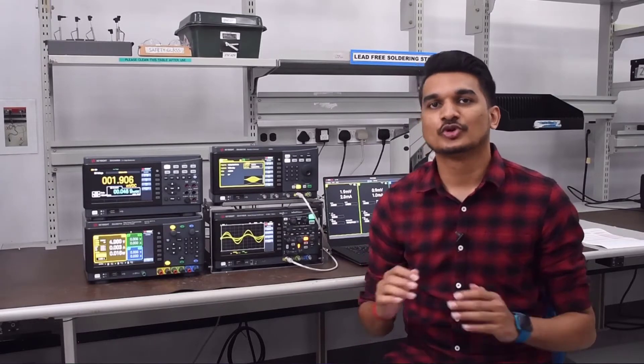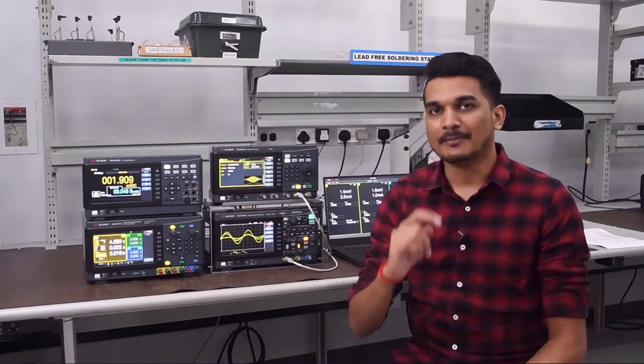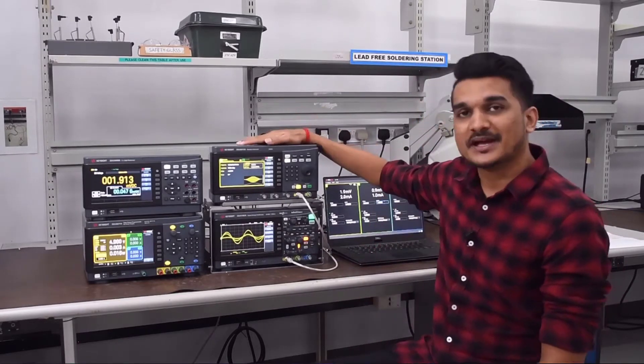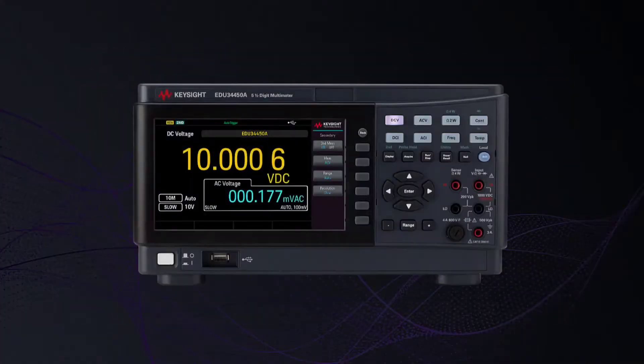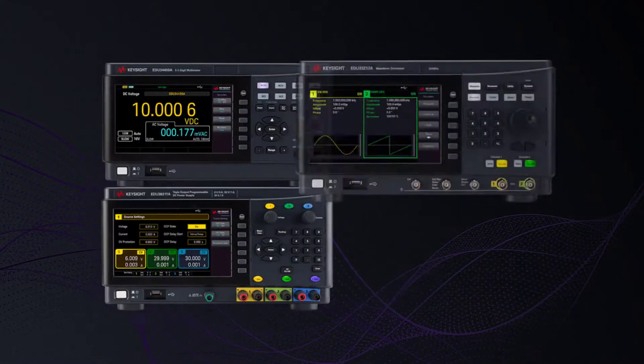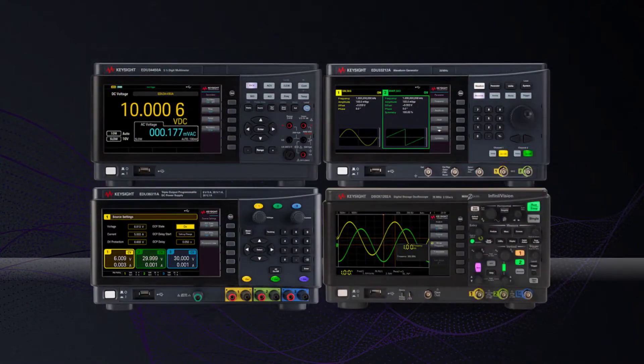In this short video, I'll introduce the latest revolution to bench test equipment for your lab. We call it the SmartBench Essentials, a set of four instruments including a digital multimeter, a power supply, a function generator, and an oscilloscope.